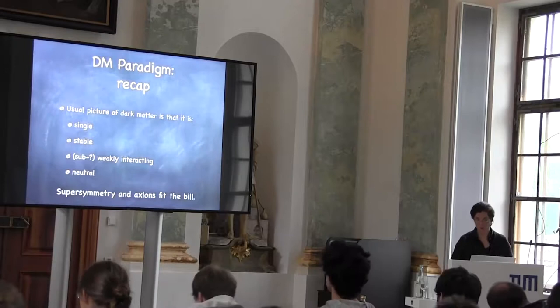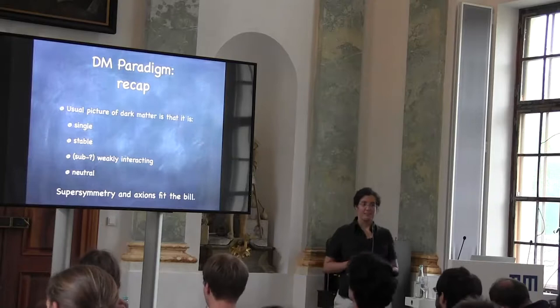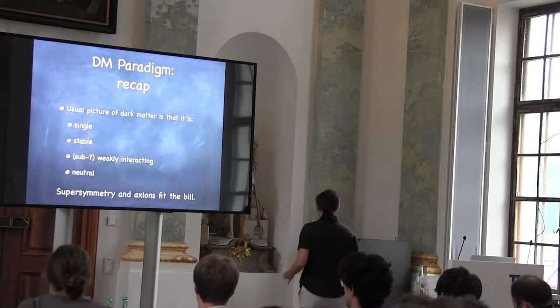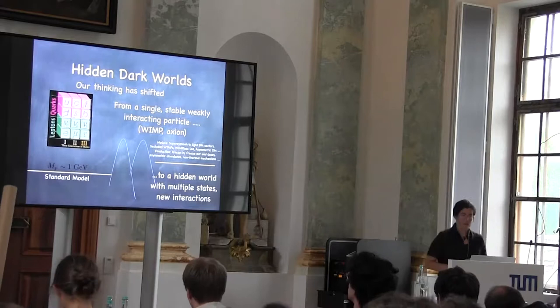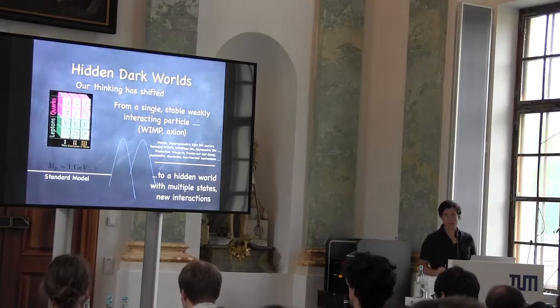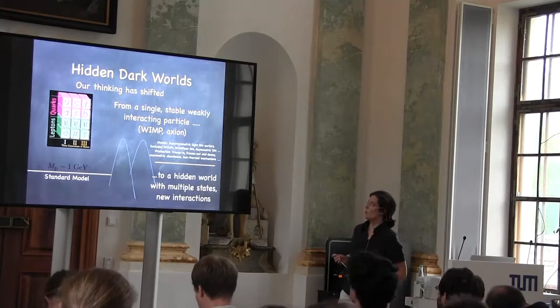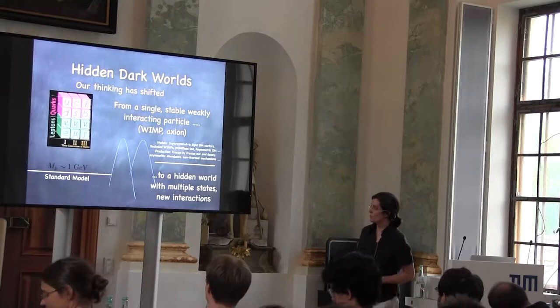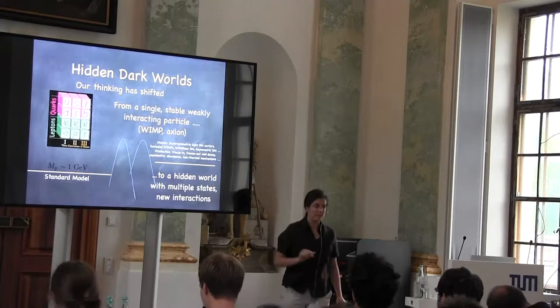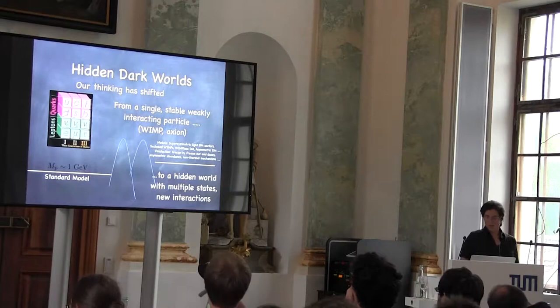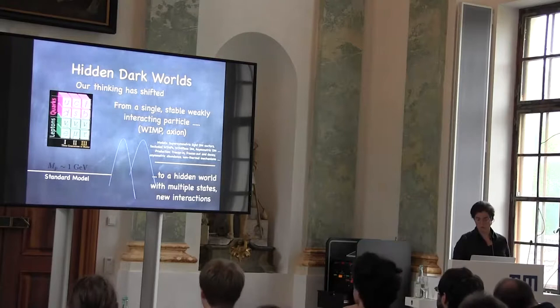The usual picture — weakly interacting neutral particles from supersymmetry and axions — may not be the way our universe actually looks. It may be that the dynamics in the dark matter sector are more akin to what happens in the Standard Model, where we have a large variety of fermions and forces. There may be complex dynamics sitting in the hidden sector, and we want to think about what kind of theory space lives there and how we design experiments to look for those hidden sectors.